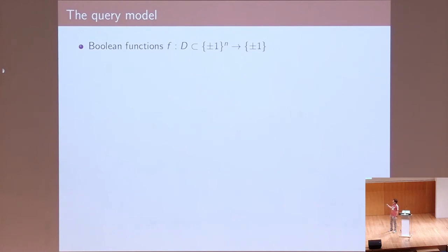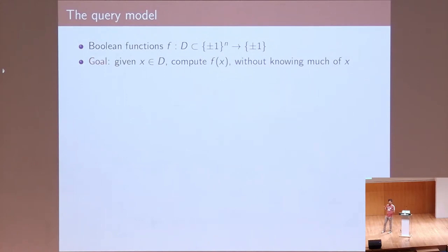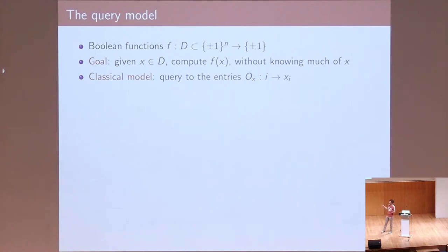Boolean functions are defined on the Boolean hypercube and take Boolean values — here, Boolean means minus one or one. In the query model, the goal is to compute the Boolean function without knowing much of the input. The cost is the number of bits of information obtained from the input, and each query accesses one entry of the input through an oracle map.